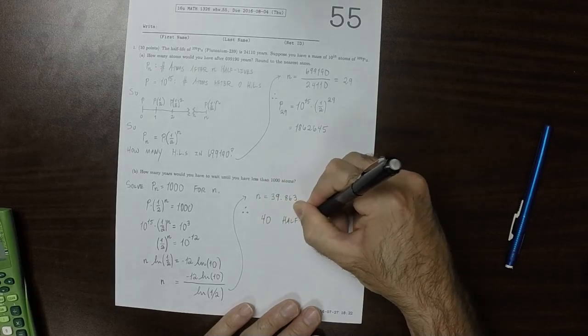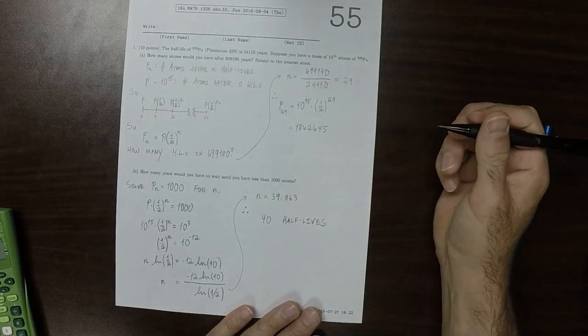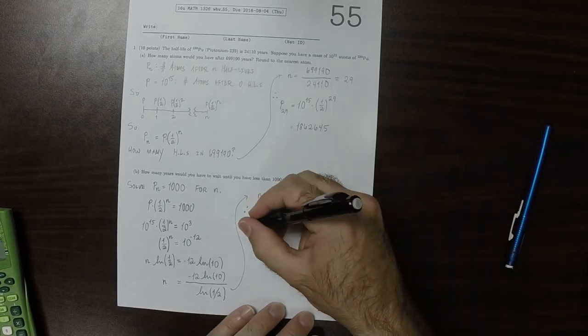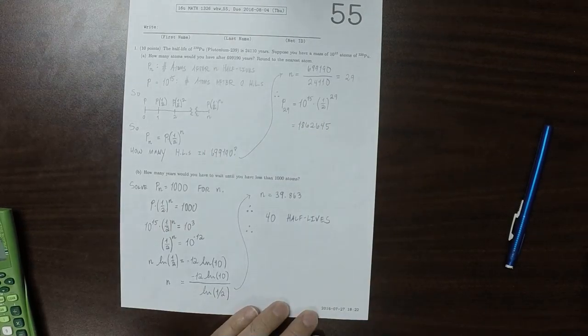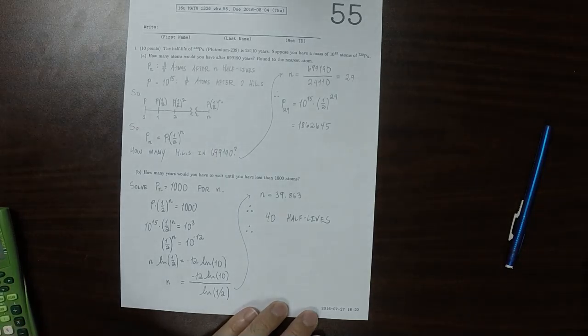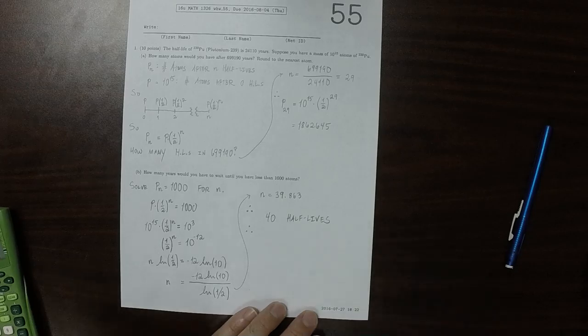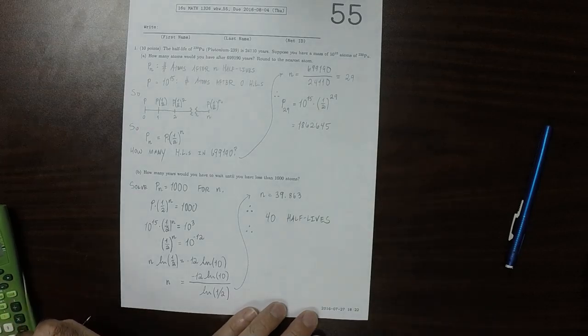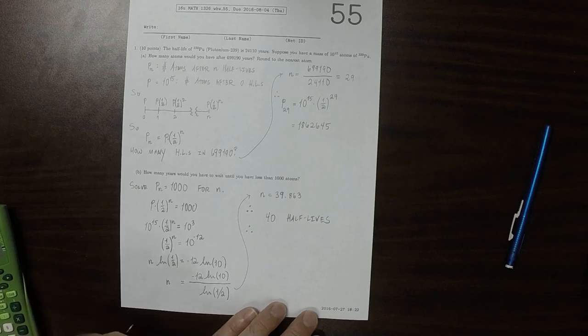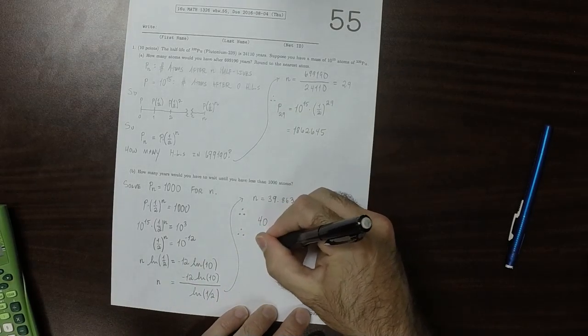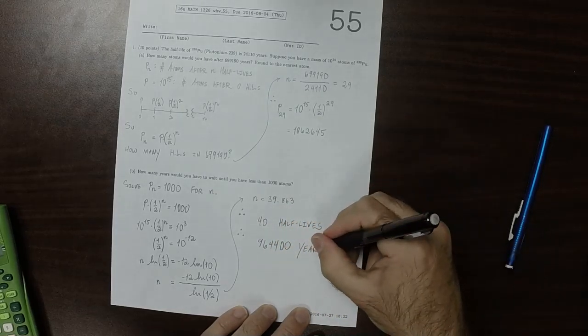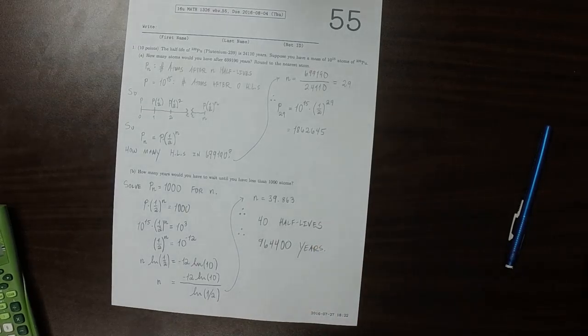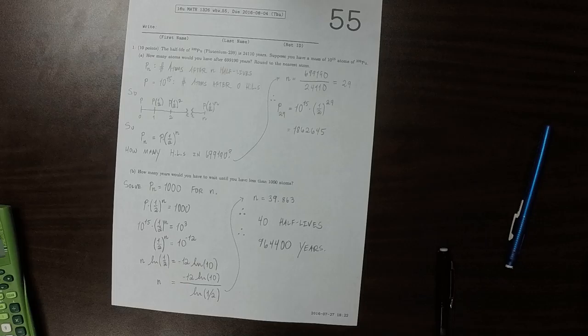So if we round this to the nearest half-life, we would need 40 half-lives. And since one half-life is 24,110 years, that would be about 964,400 years.